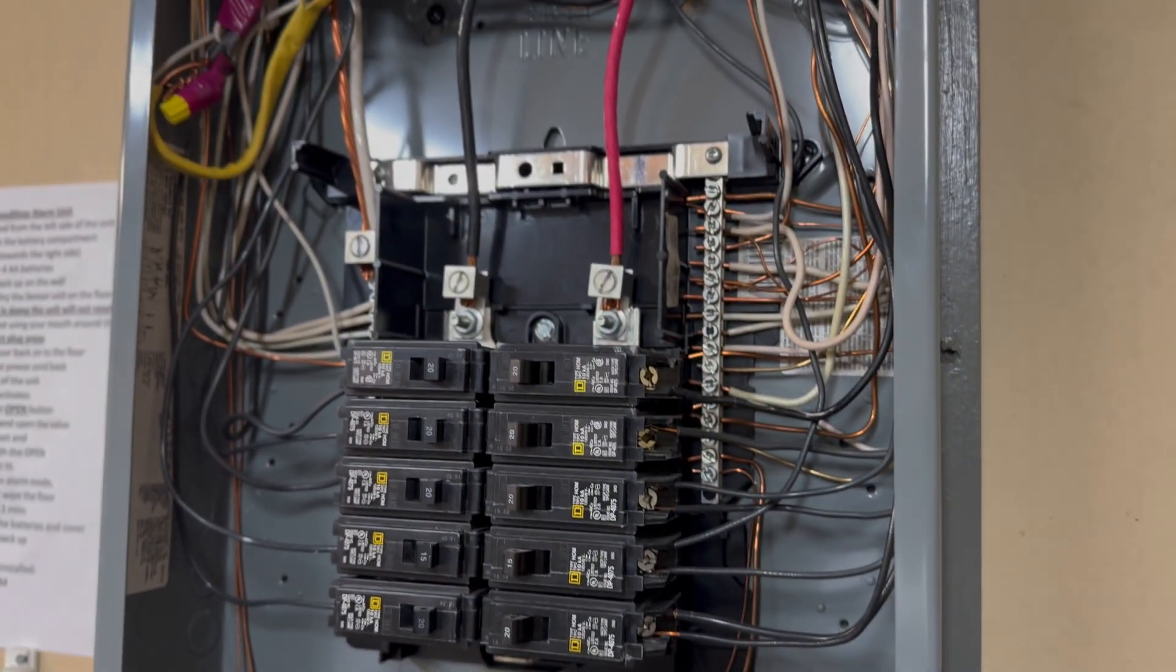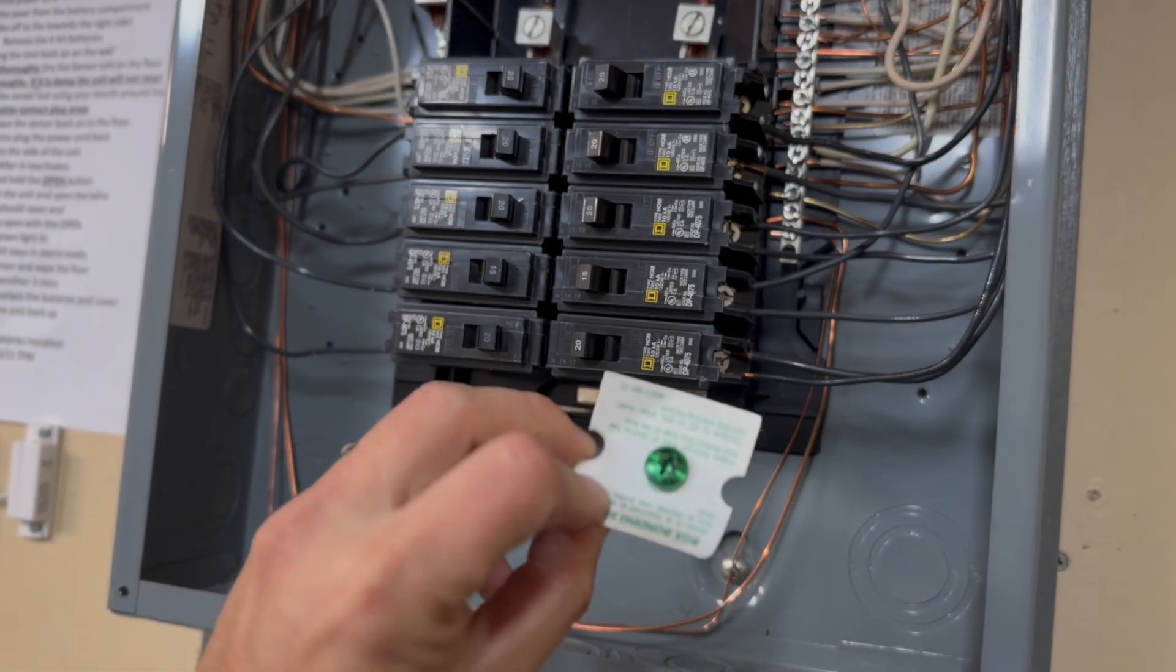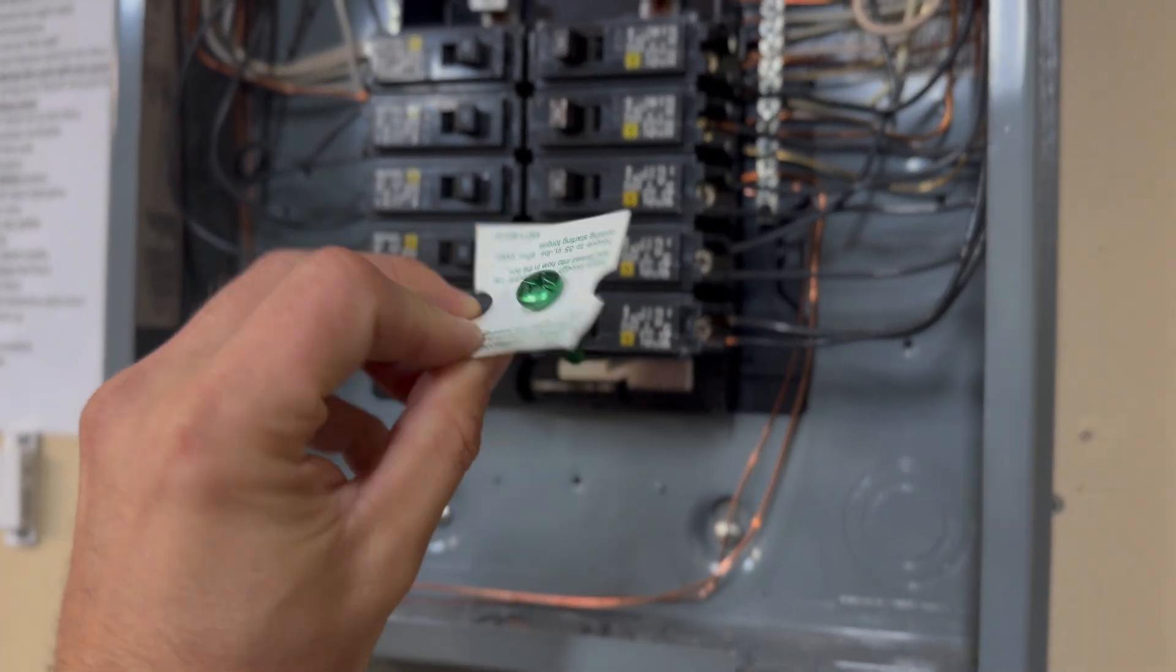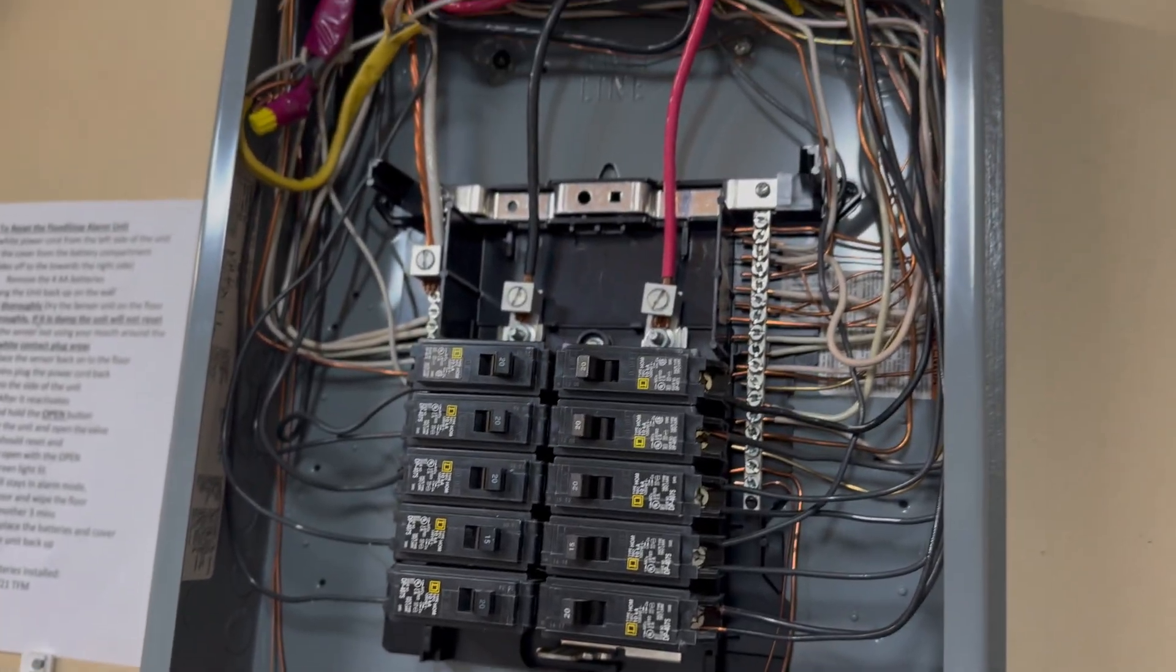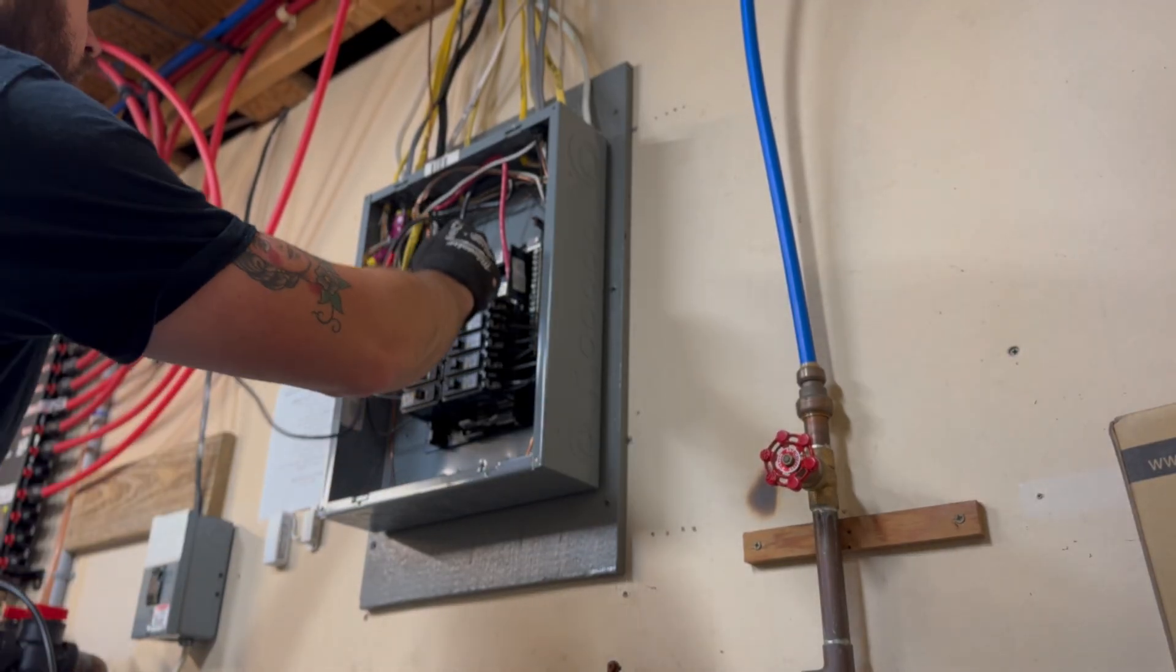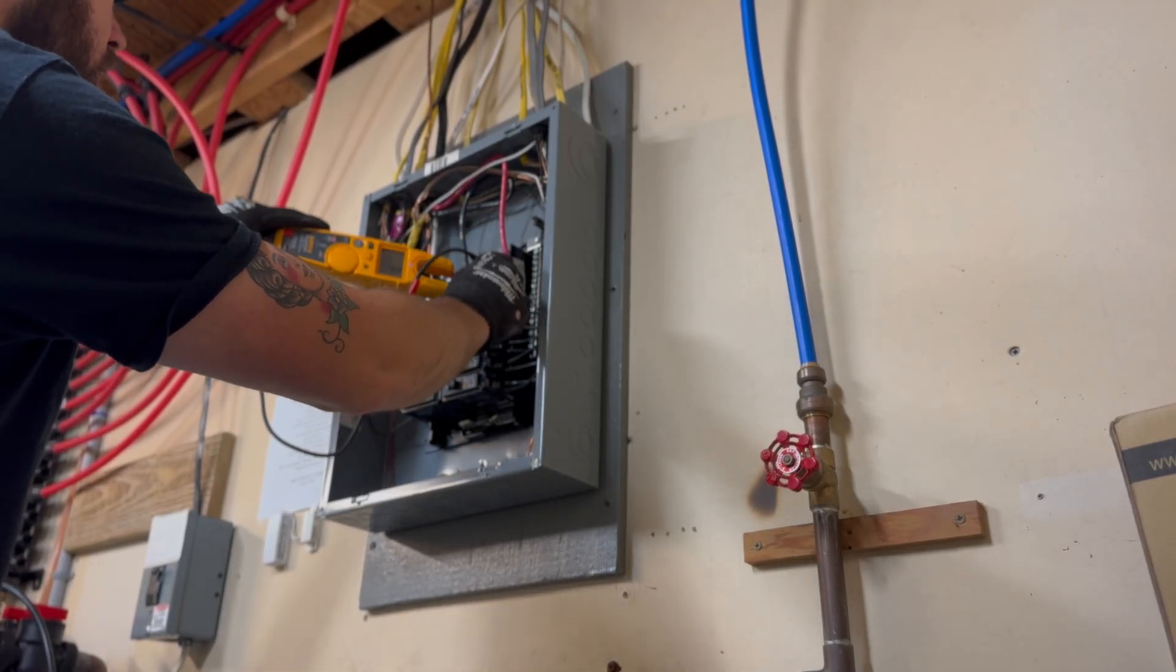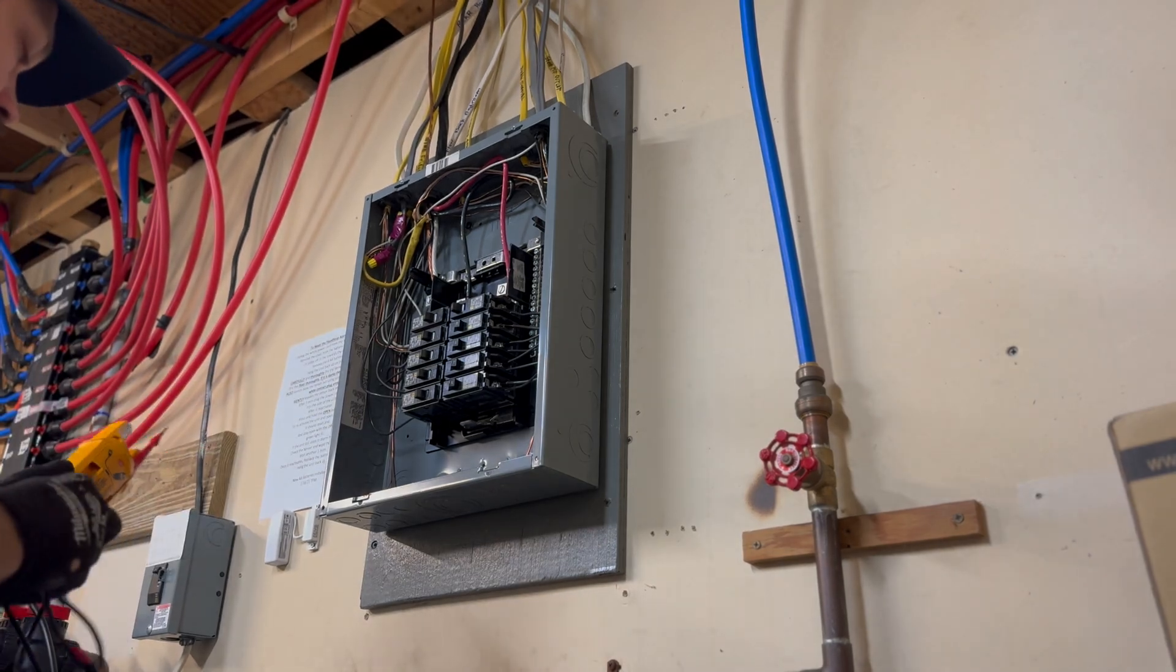The issue on top of this is that the bonding screw for this panel is just sitting inside the panel. Normally you would install this screw to bond the cabinet and the neutrals together, so the grounds and neutrals would be bonded. But they are not supposed to be bonded in this sub-panel, so that's what we're taking care of today.